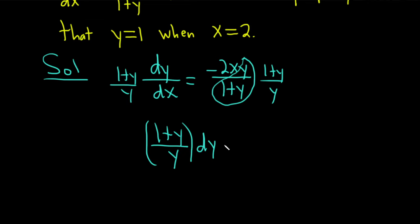And then multiply by dx. This will be negative 2x dx. So the dx comes over here as well. dx cancels and comes over here.